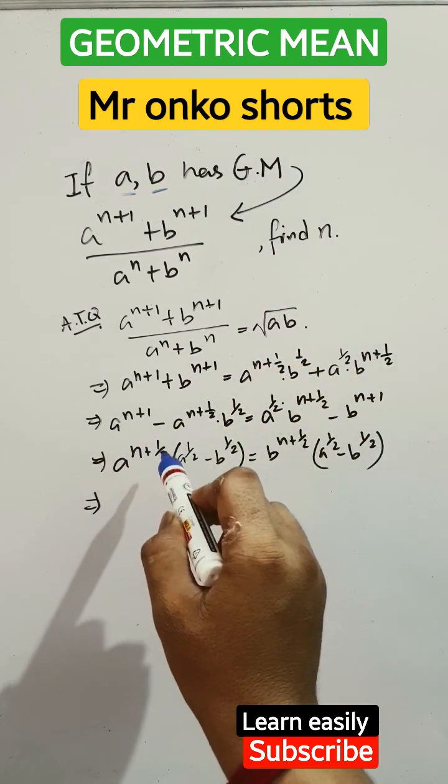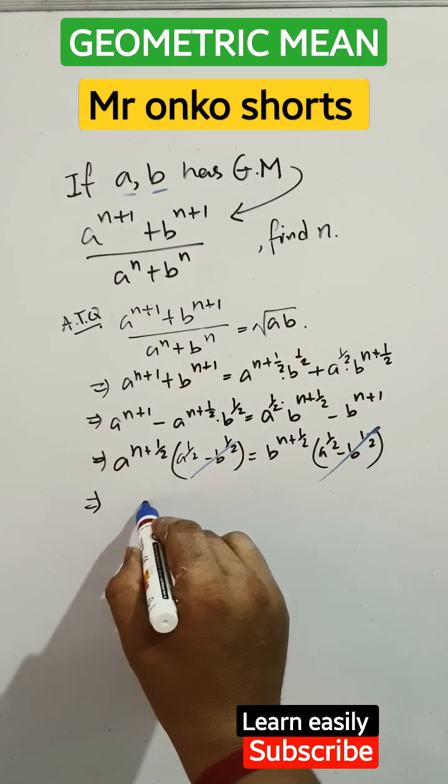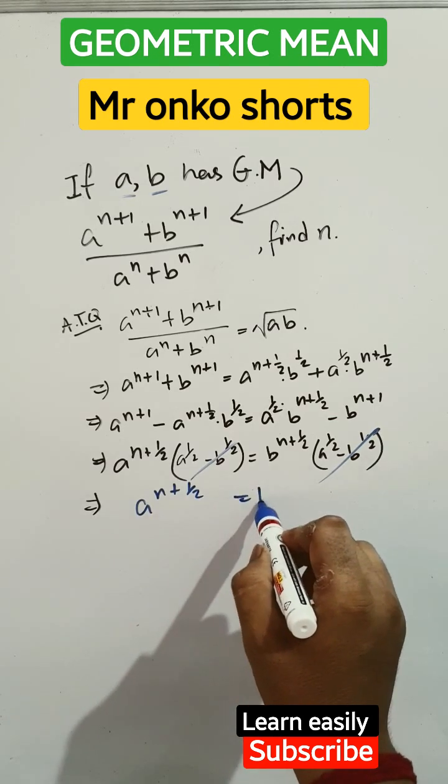And taken common a to the power n plus half, and we got this. Now these two parts are equal, so we can cancel them. So a to the power n plus half equals to b to the power n plus half.